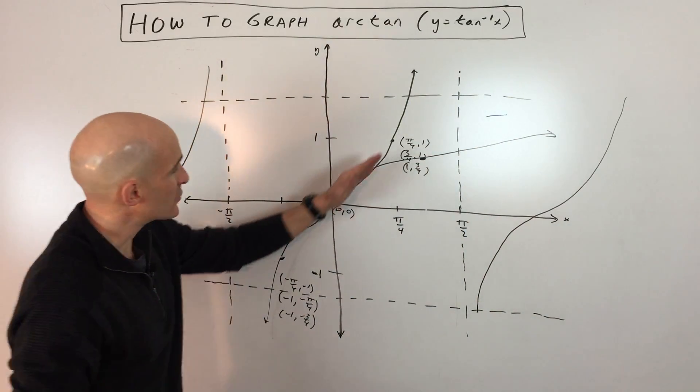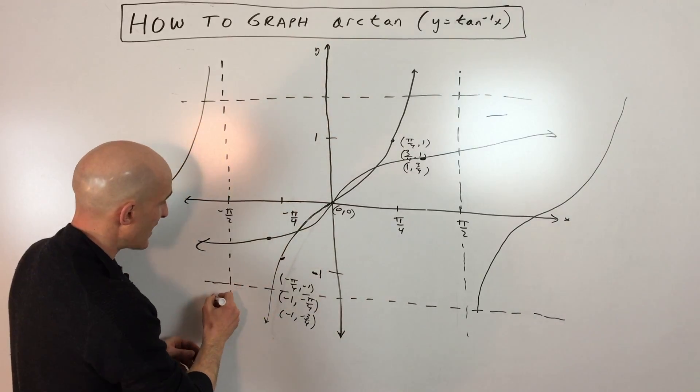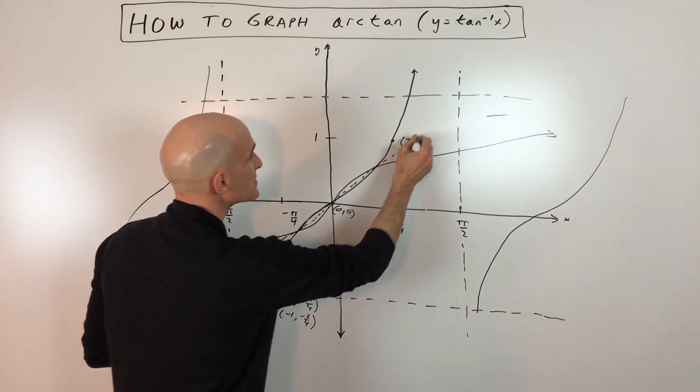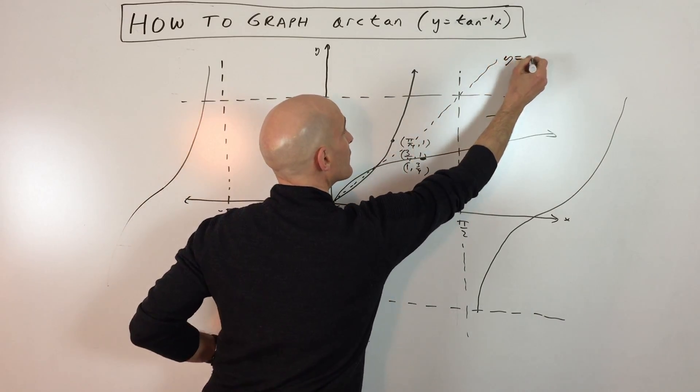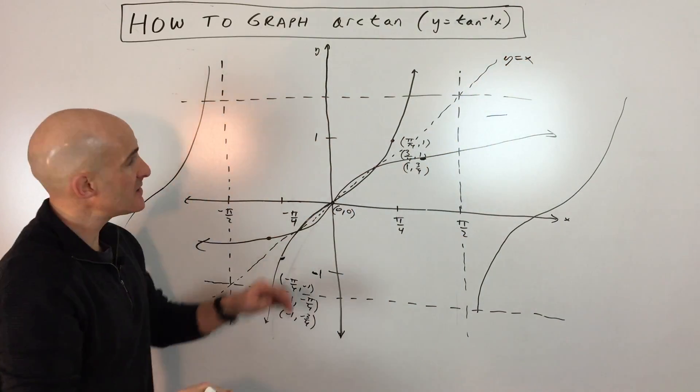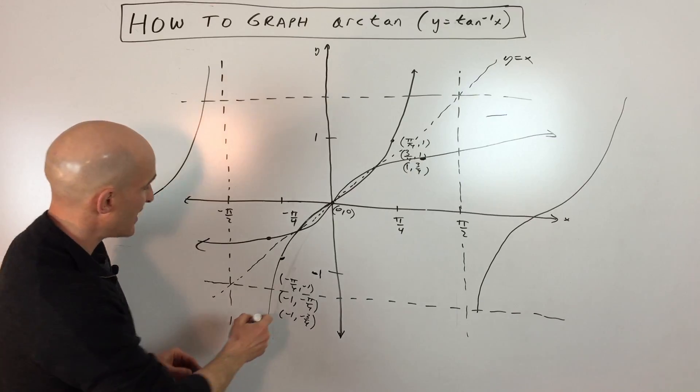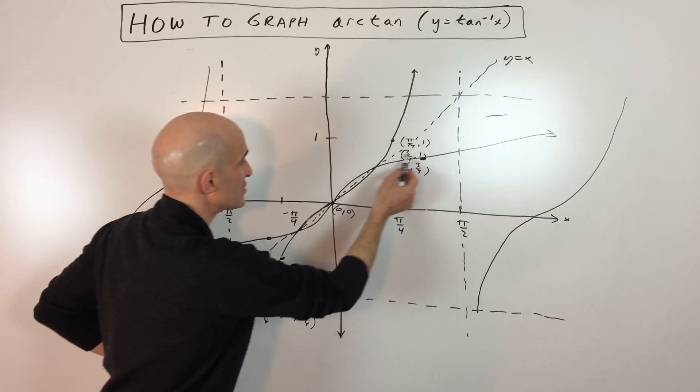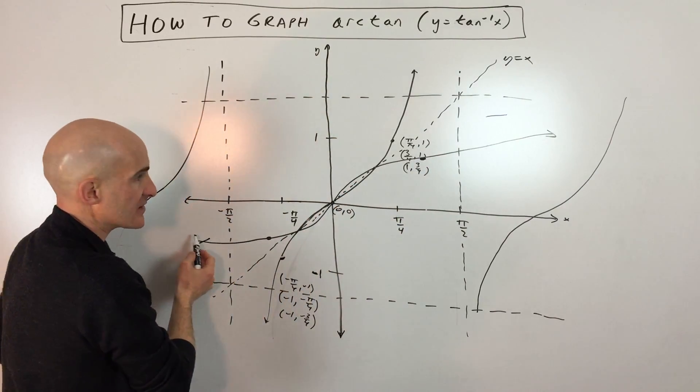And what you'll notice is that it's a reflection over this line y equals x. So if I sketch this in here, this line y equals x has a slope of 1. And you can see that the original graph, our tangent, is being reflected over that line. And here's our tangent inverse graph like this.